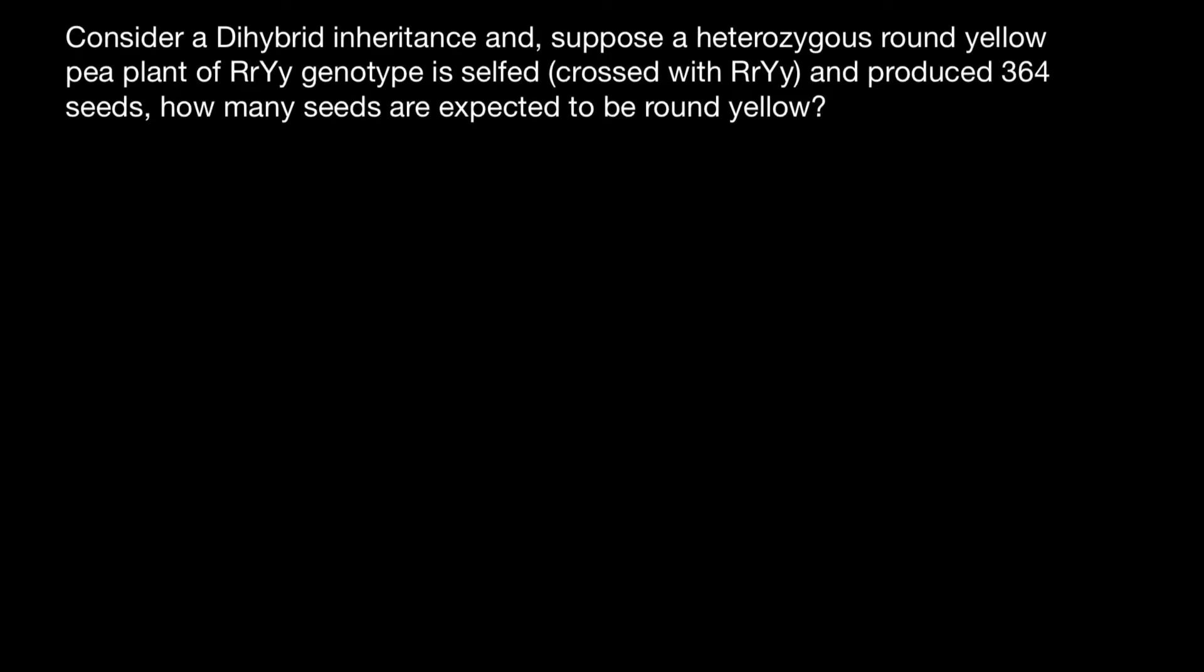Hello and welcome to Nikolai's genetics lessons. Today's question I got from one of my subscribers. Consider a dihybrid inheritance and suppose a heterozygous round yellow pea plant of RrYy genotype is self-crossed with RrYy and produces 364 seeds.